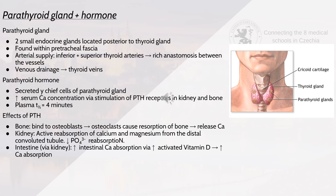The parathyroid gland consists of two small endocrine glands located posterior to the thyroid gland within the pretracheal fascia. Arterial supply is from the inferior and superior thyroid arteries with rich anastomosis; venous drainage is into the thyroid veins. Parathyroid hormone is secreted by chief cells and increases serum calcium via stimulation of parathyroid receptors in the kidney and bone, with a plasma half-life of approximately four minutes. In bone, PTH binds to osteoblasts, causing osteoclasts to resorb bone and release calcium. In the kidneys, it causes active reabsorption of calcium and magnesium from the distal convoluted tubule and decreased phosphate reabsorption. Via the kidneys, it increases intestinal calcium absorption through activated vitamin D.